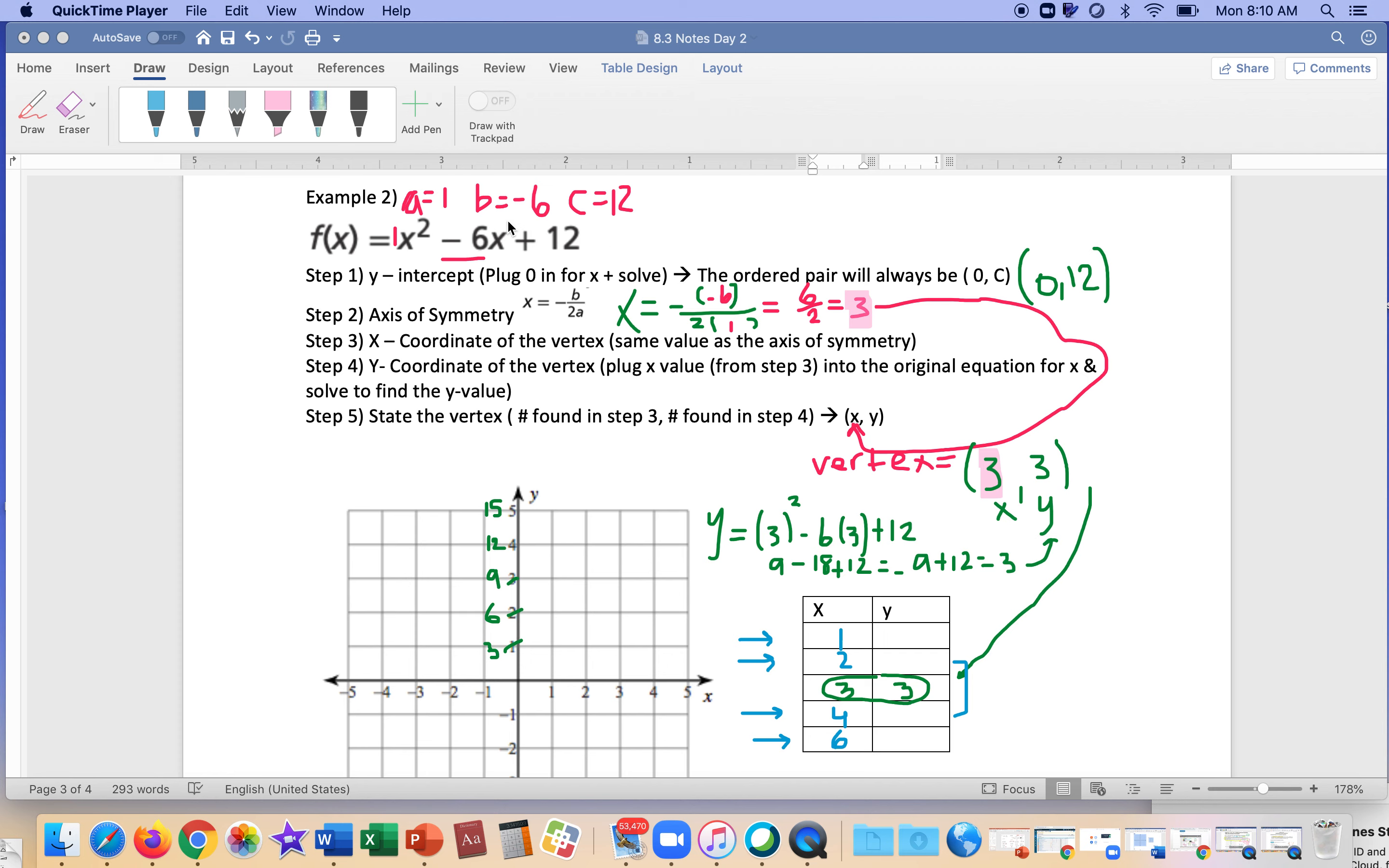And remember, if you put in 0 for x, because you want y-intercept, the x is canceled and you're left with 12. So then, axis of symmetry is negative b over 2a, so it's negative, we do parentheses because we're going to insert something for b, over 2, we do parentheses because we're going to insert something for a. So in the b slot, we have to plug in negative 6, in the a slot, we plug in 1. So double negatives on top is 6 over 2, which is 3.